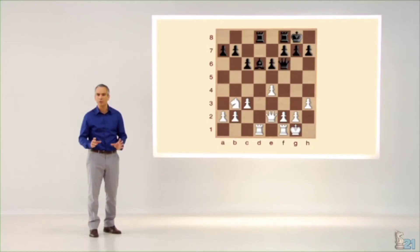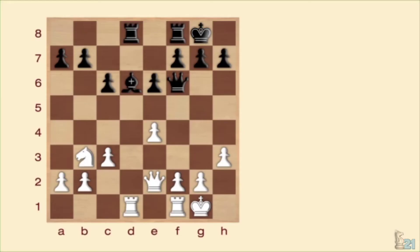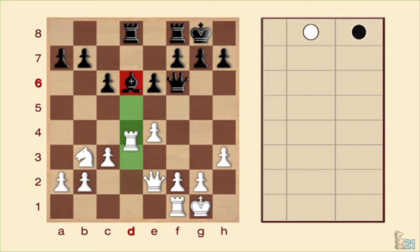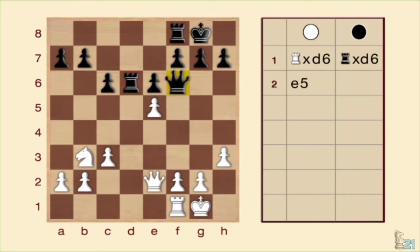¿Lo habéis encontrado? La solución es torre por D6. ¿Por qué? Porque después de la captura obligada, torre por D6, el peón tiene la posibilidad de avanzar una casilla y realizar una horquilla, o lo que es lo mismo, un ataque doble. Cuando las negras se ven obligadas a salvar la dama, el peón toma la otra pieza y observamos que finalmente acaba ganando una pieza.